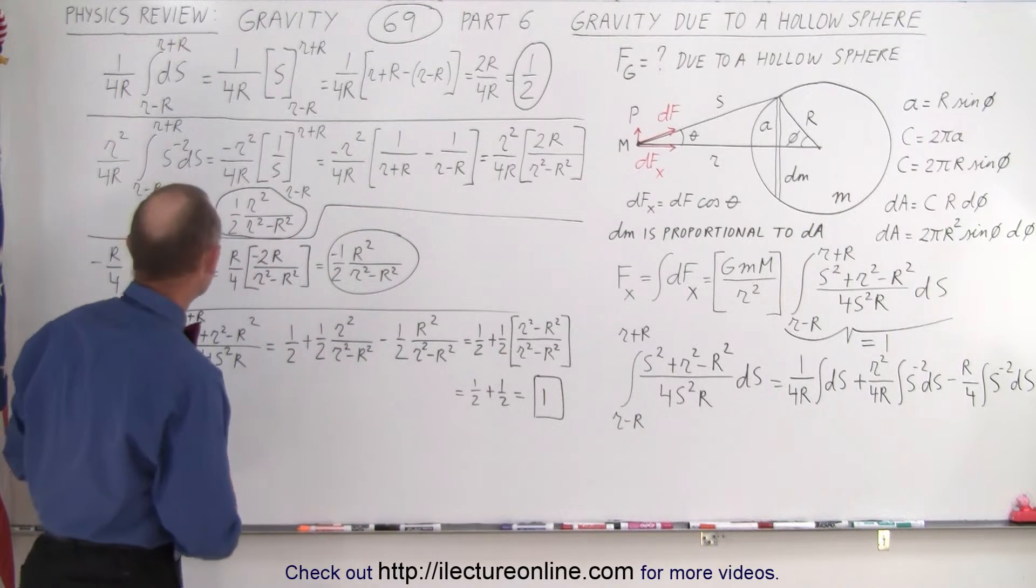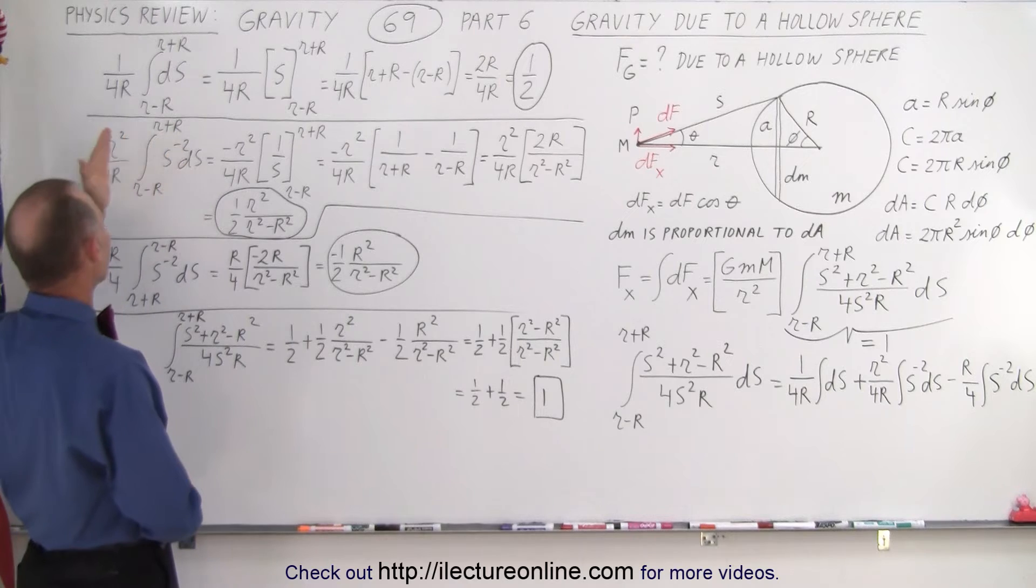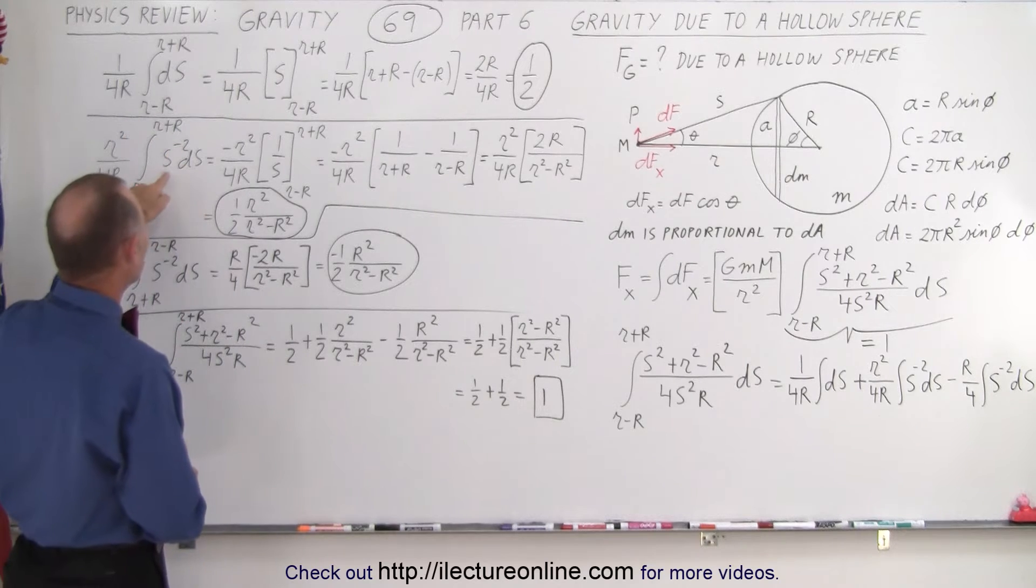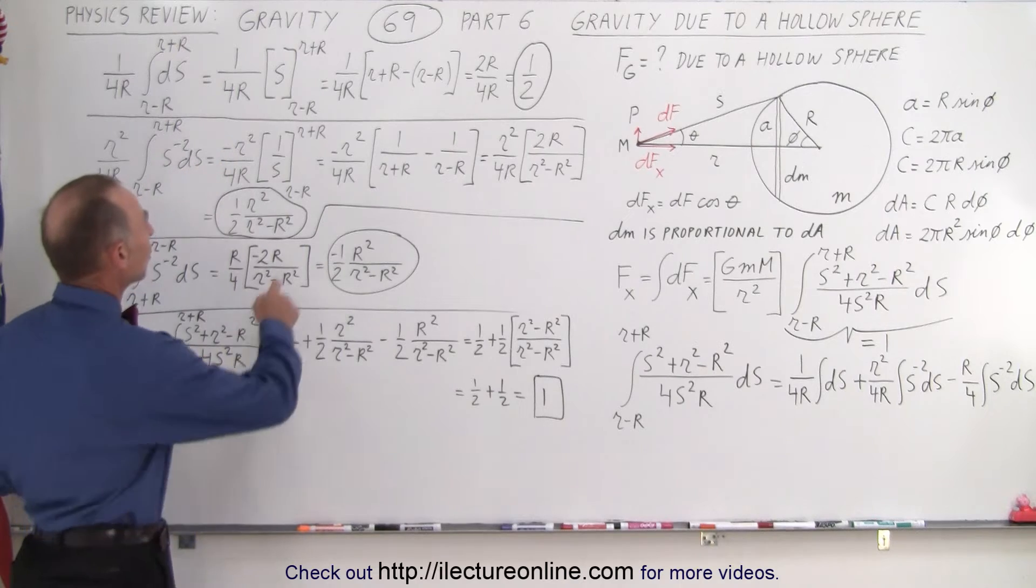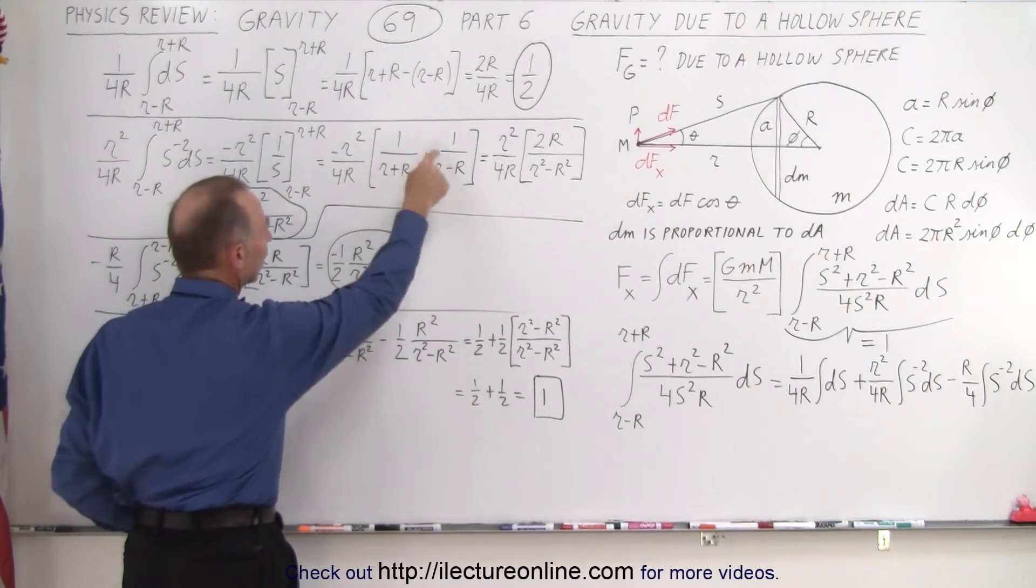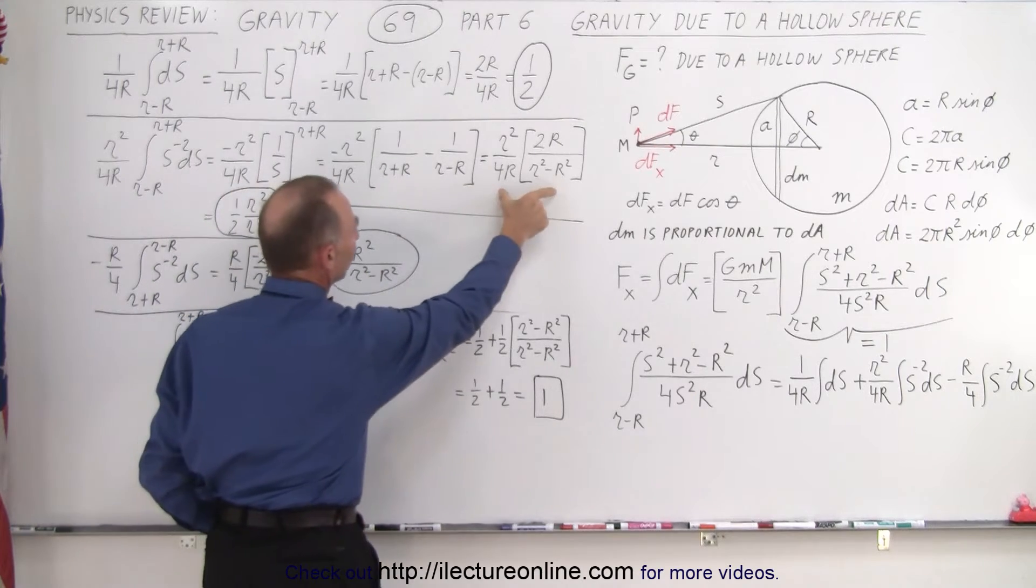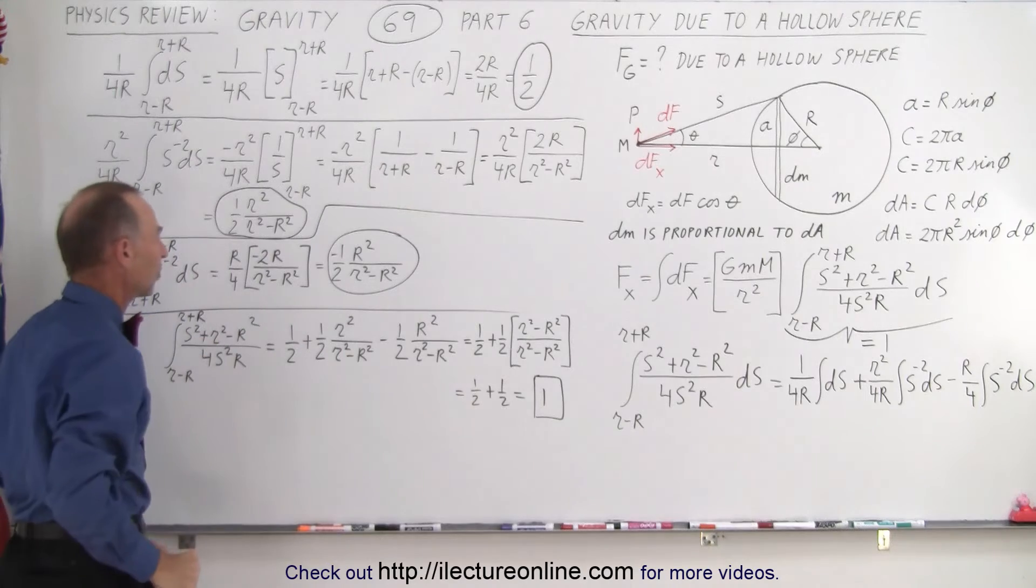The second one is a little bit more challenging. Here we have the integral of s to the minus 2 ds, we took out all the constants, and of course when we integrate that, we get minus 1 over s, we put the minus over here, we plug in the limits, then we get this, and then we clean that up algebraically, we end up with this expression right here, and simplifying that, we end up with the expression right here.